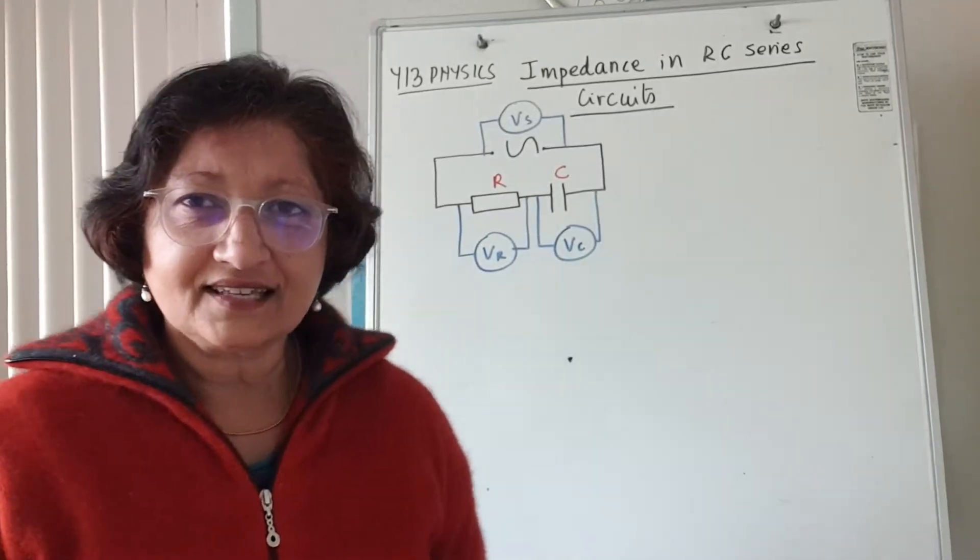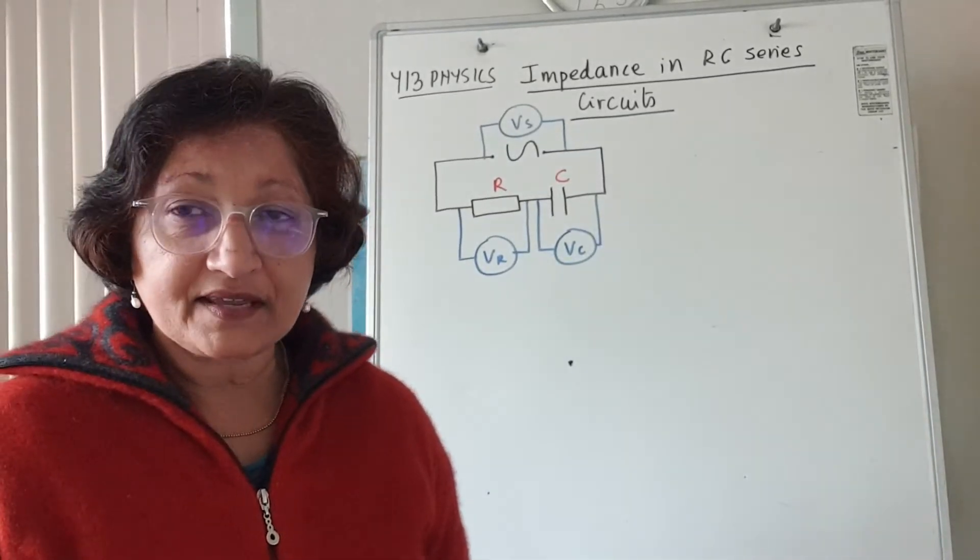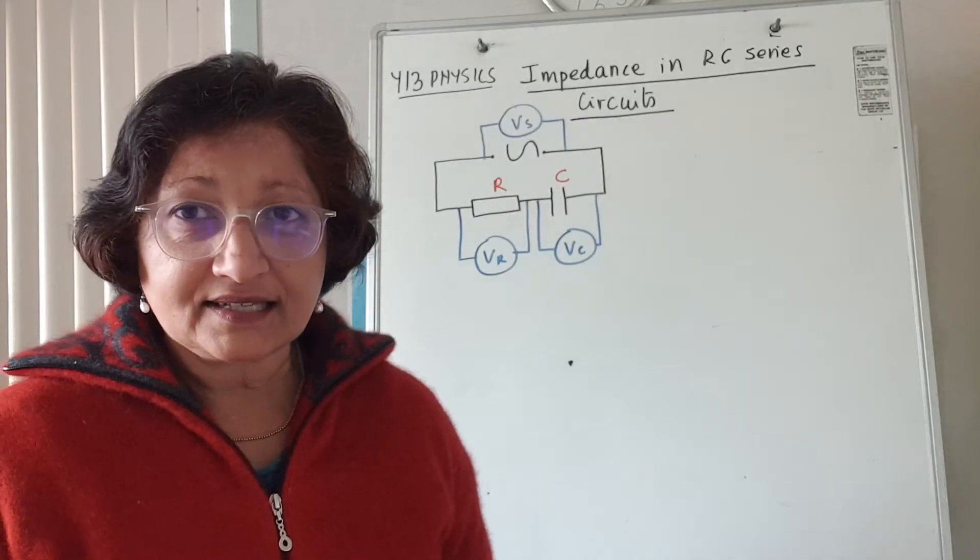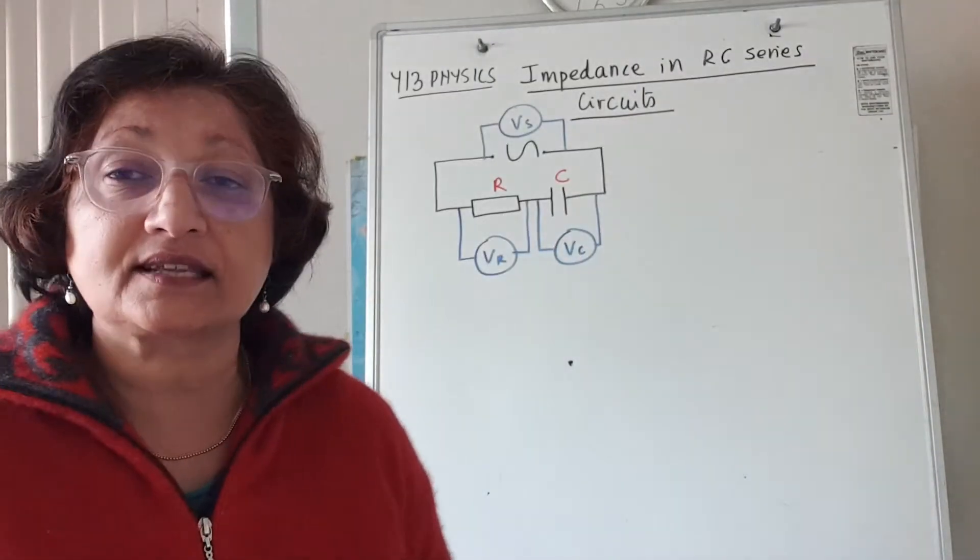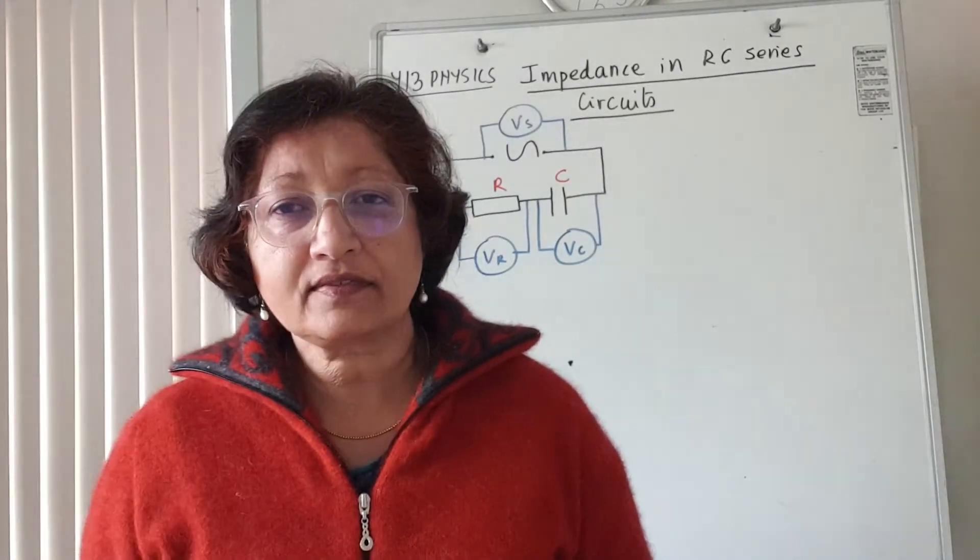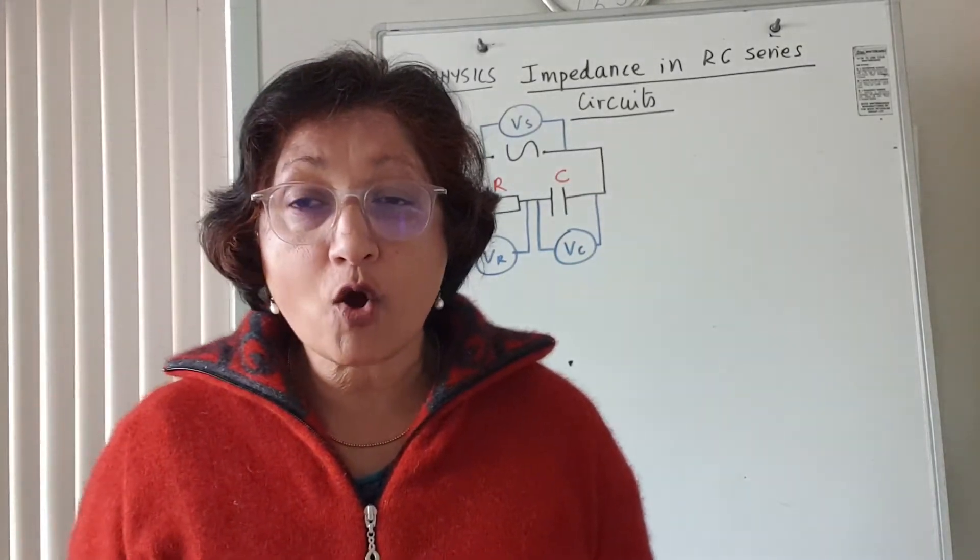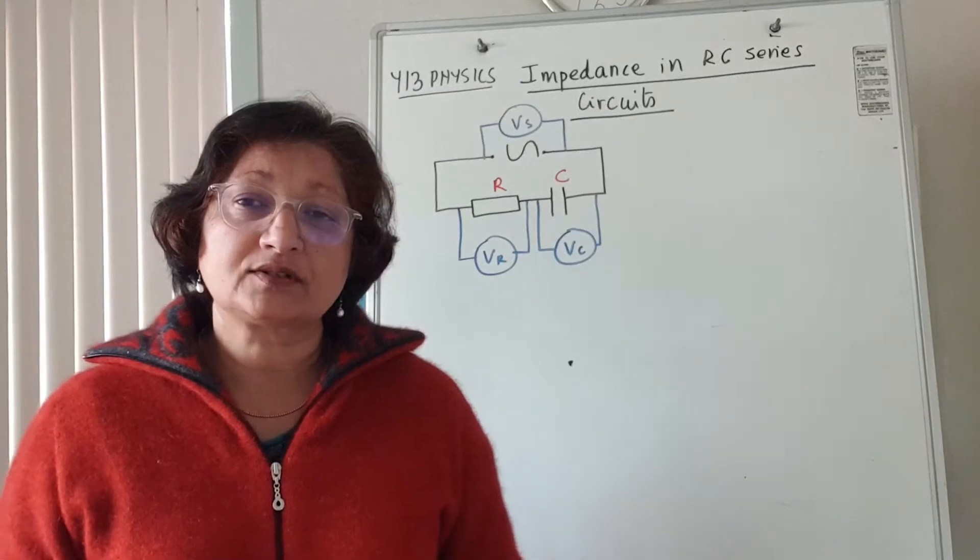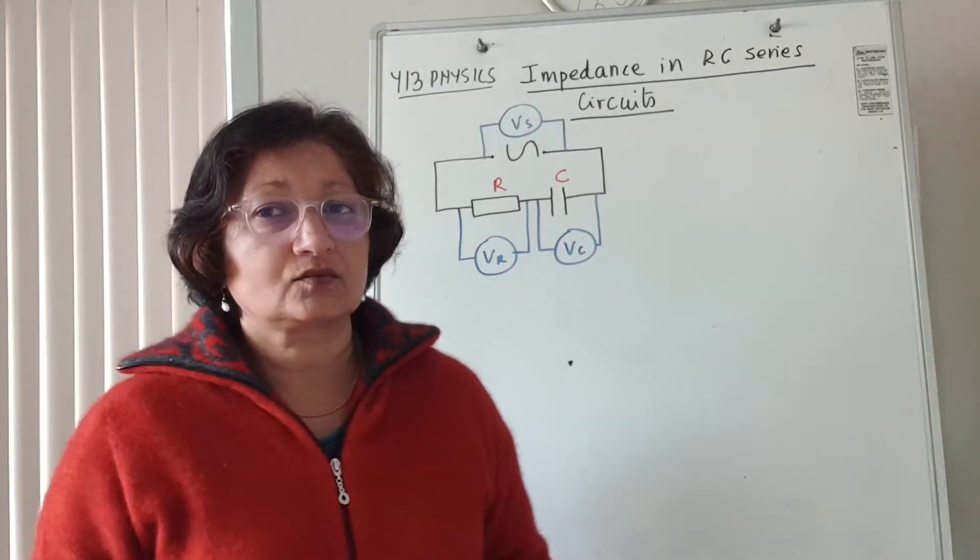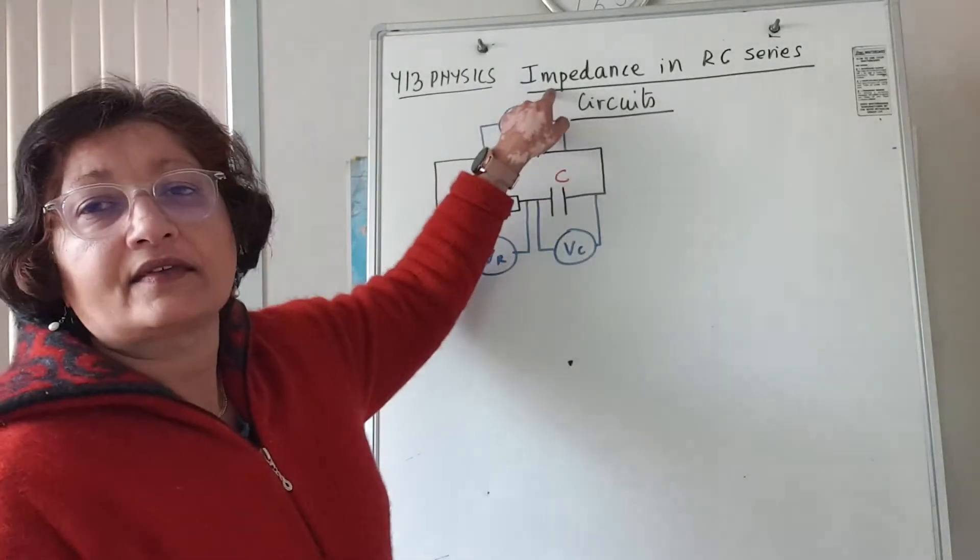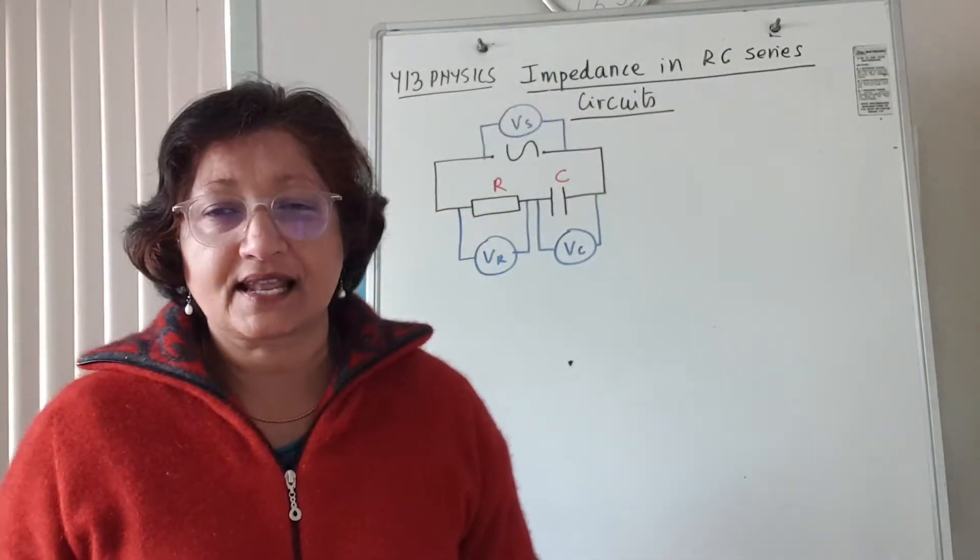Hi everybody, this is a lesson about impedance in an AC circuit when you have a resistor and a capacitor connected in series. The thing is, whenever you have a component in any circuit, the component limits the current and this current limiting effect is called impedance, represented by the letter Z.